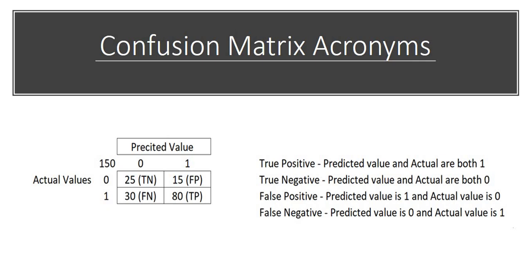So let's start with the building blocks of the confusion matrix. If you can easily identify true negative, false negative, true positive, and false positive, then 90% of the battle is won. True positive is when the predicted value and the actual value are both one. True negative is when the model predicts zero and the actual value is zero — the model correctly predicts the negative class. False positive is when the predicted value is one but the actual value is zero. False negative is when the predicted value is zero but the actual value is one.